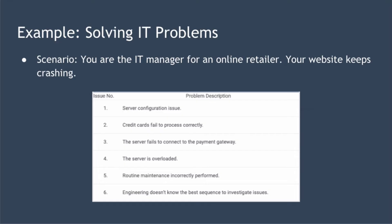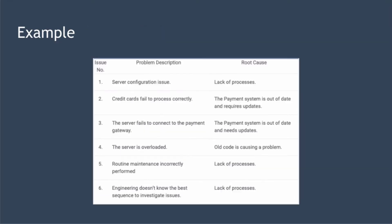Step one is to get a list of all the reasons the server is crashing together, and you can see that here in this image. Next you want to find the root cause of each problem, as shown here. A good way to find root causes is to use the five whys technique — I'll include a link to a video about that beneath this one. For each item on the list, we've identified the underlying root cause of that problem.